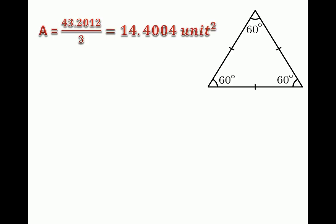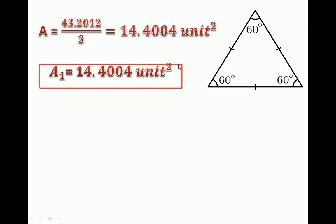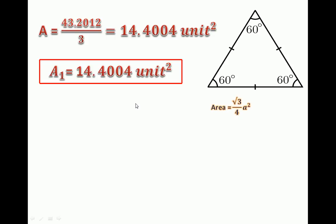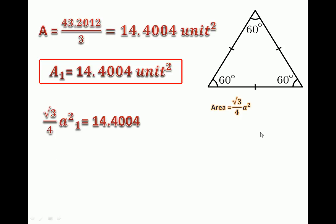Now when we divide this whole area by 3, it will give the value 14.4004 square units. We set this area as A1. We also know that the area of an equilateral triangle is (√3 / 4) × a². So the equation becomes: (√3 / 4) × a1² = 14.4004. We will use this to find one side of our A1 area.